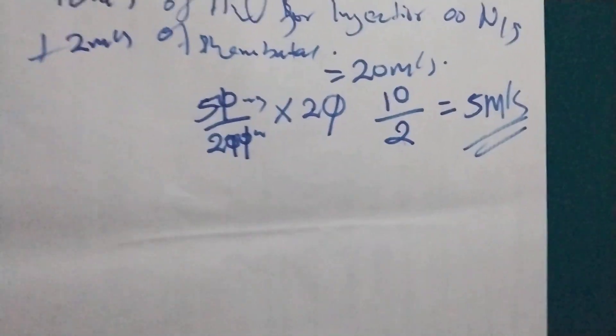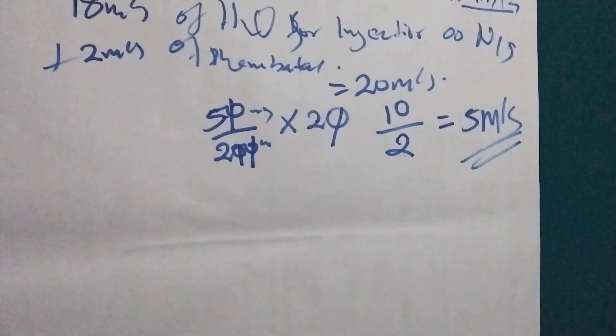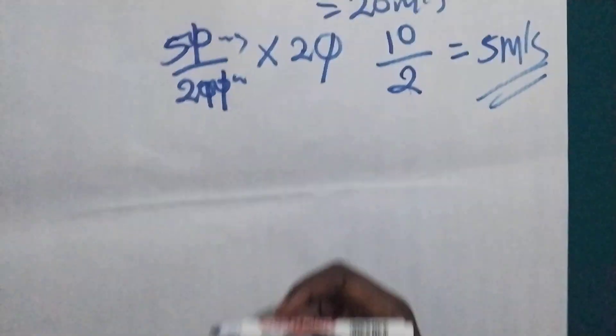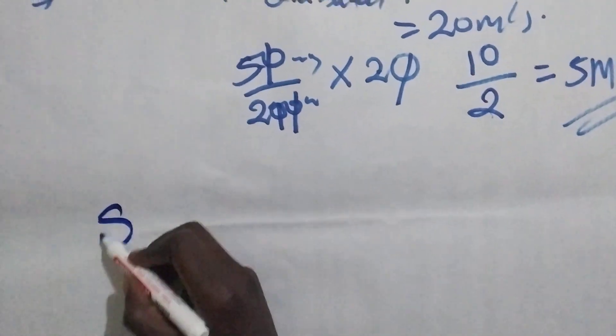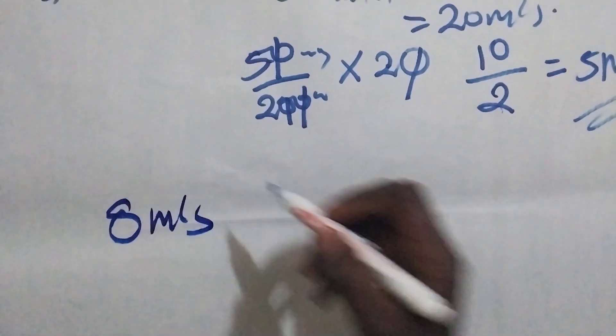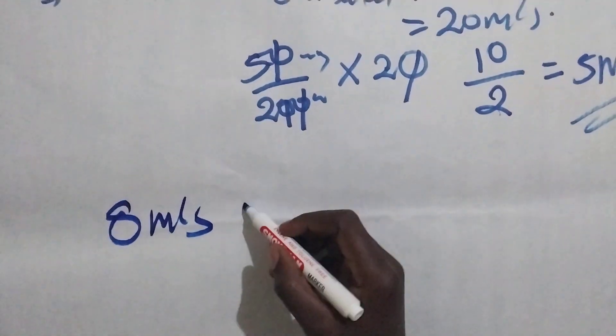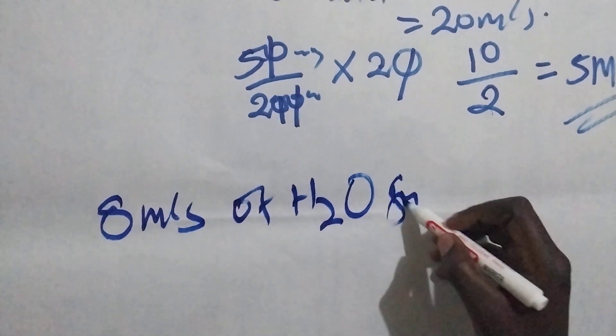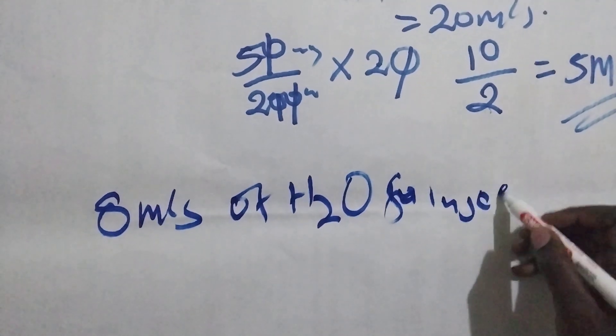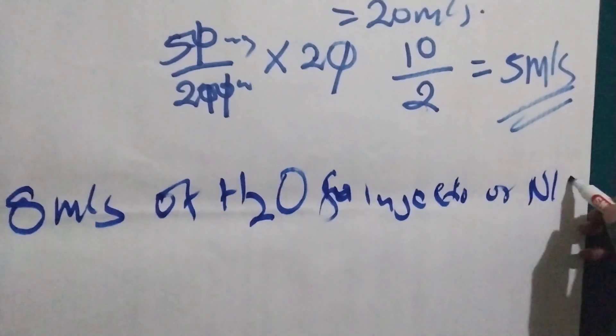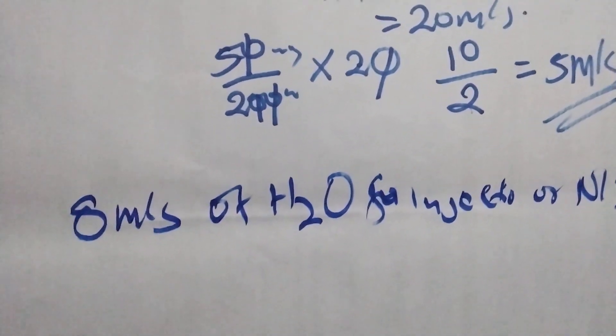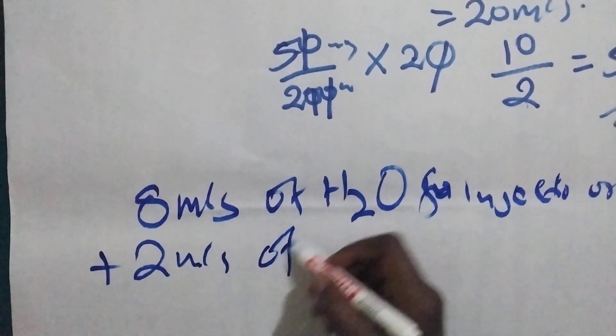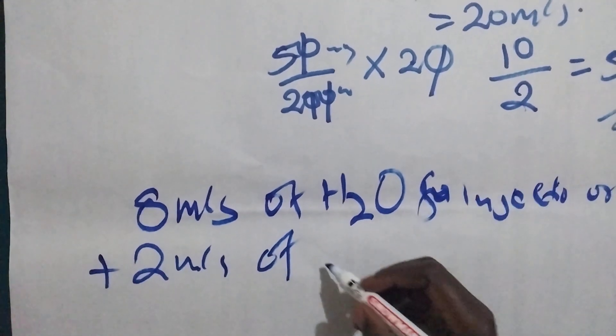Let's go to the neonatal unit. How do they give it? In the neonatal unit, the first dilution, they use 8 mls of water for injection or normal saline. Then they add 2 mls of phenobarbital.